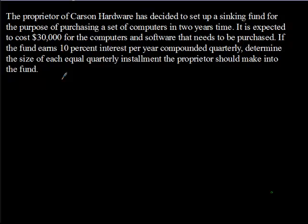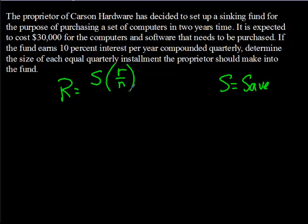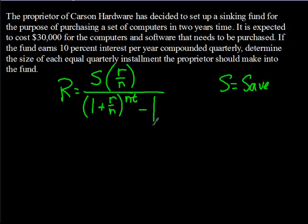This formula can also be used for personal savings goals, such as saving up $1,000,000 for retirement. The sinking fund formula is a little different from the amortization formula. Capital R equals capital S — the amount we want to save — times lowercase r over lowercase n, all over the quantity of 1 plus r over n raised to the n times t power, minus 1. Make sure you don't use the wrong formula for the problem.